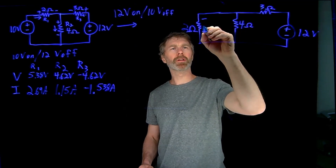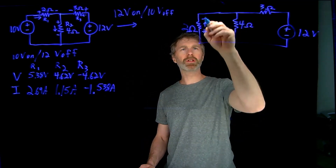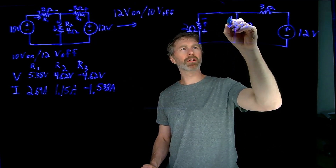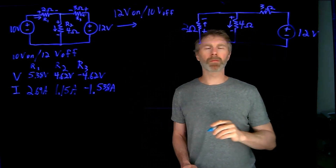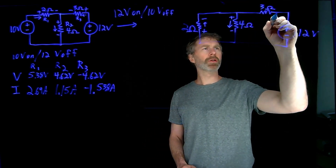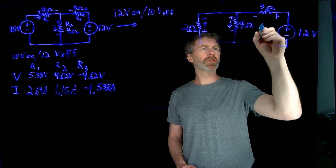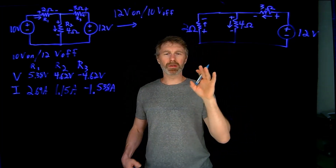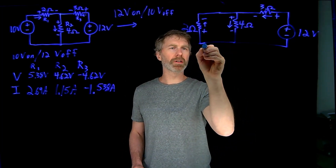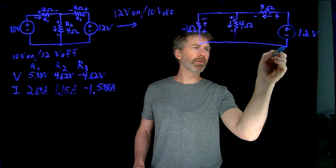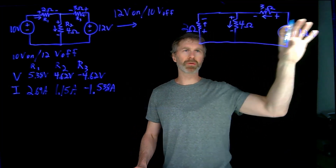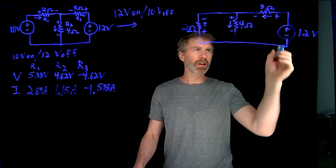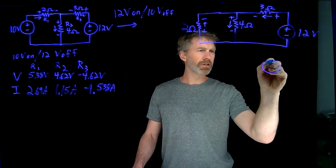I'll redefine the polarities and current directions for each resistor in this new configuration. The current through the 2-ohm resistor is defined going upward; for the 4-ohm resistor, the current goes in that direction; and for the 3-ohm resistor, I've defined the voltage and current directions as shown. The analysis steps are nearly identical to what we did for the 10-volt circuit — there's just a 12-volt source on the other side now.